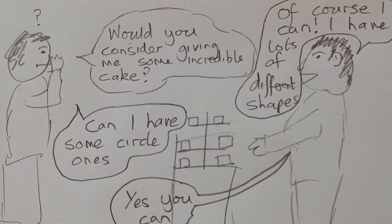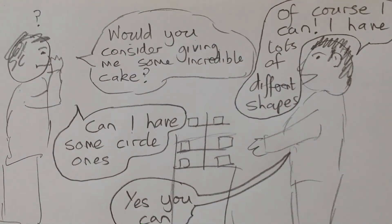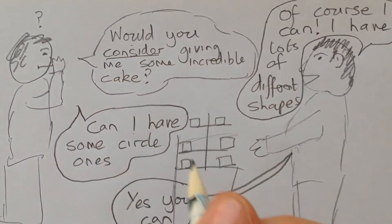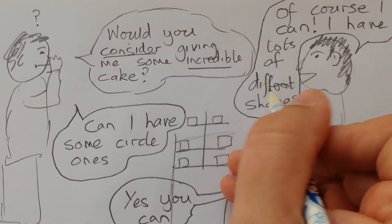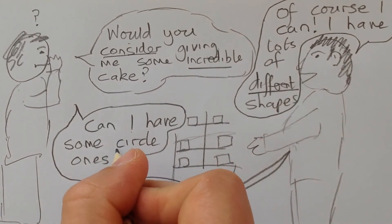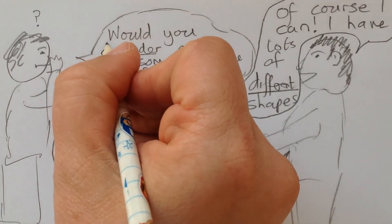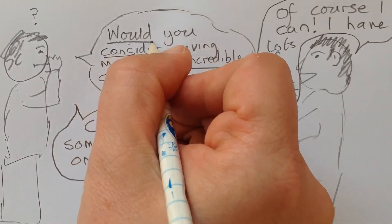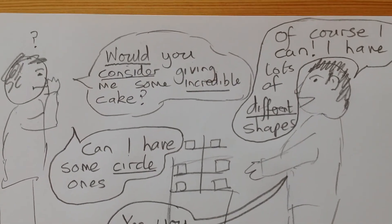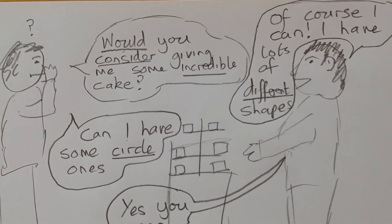My amazing comic book of someone asking for some cake. I've got in here consider, I've got incredible, I've got different, I've got circle, and I showed you could in one of my other videos. So I've got wood which follows the same spelling pattern. So I've got lots of really good words in there to create my comic book. Have fun creating your own.